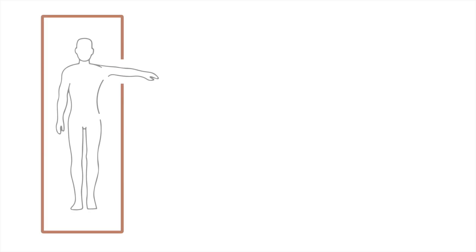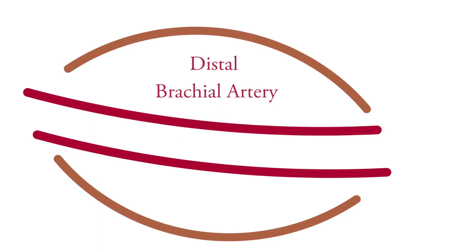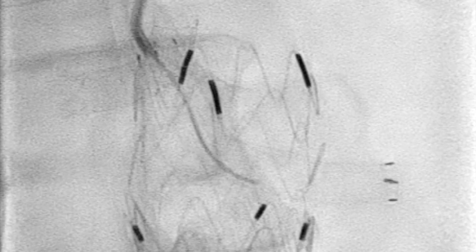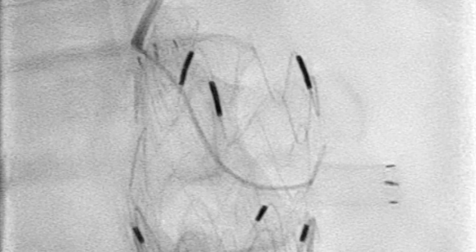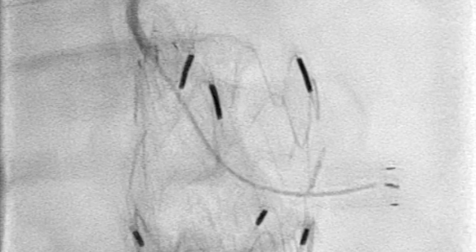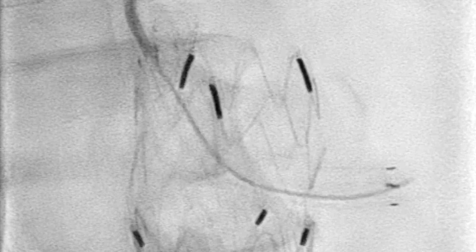Moving on to the procedure, we positioned the patient supine with the left arm out. Next, we made an incision and exposed the distal brachial artery right above the elbow, and gained access with a micropuncture needle and an introducer kit. We used an O35 Advantage wire to get down the descending thoracic aorta, and then upsized to a 7 French Tour Guide steerable sheath. We then catheterized and crossed the existing 6x50 Viobon snorkel graft using an O35 angled glide cath and a regular angled glide wire.